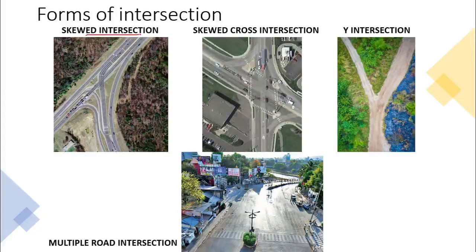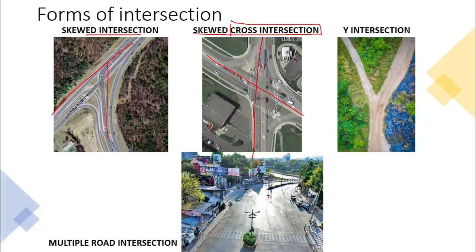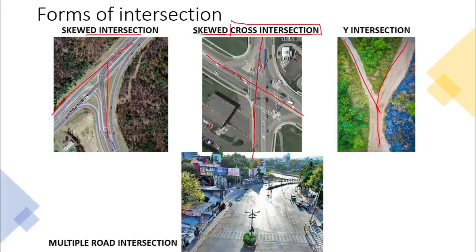Then you have a skewed intersection, top left, where the main road and the minor road meet each other but at some angle — it is not 90 degrees. Then you have a skewed cross: four roads intersecting each other but not at 90 degrees. In a regular cross intersection roads meet at 90 degrees, but in a skewed cross it is at a different angle. Then you have a Y intersection, which makes a Y shape — one road diverging into two roads.